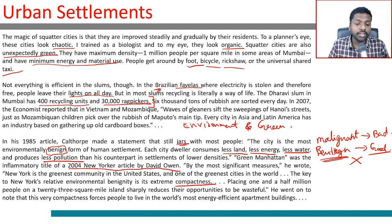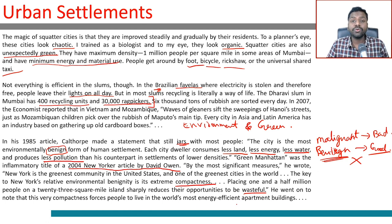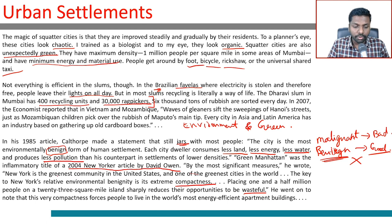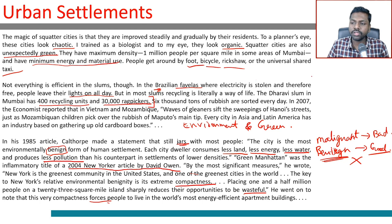The key to New York's relative environmental benignity is its extreme compactness — placing one and a half million people on a 23 square mile island sharply reduces their opportunities to be wasteful. They utilize and take out the maximum possible value from anything given to them. This very compactness forces people to live in the world's most energy-efficient apartment buildings.